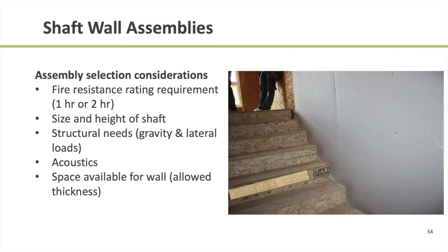Let's talk about selecting an assembly for our shaft enclosure walls. We know what materials can be used, whether it's a one or two-hour rated wall. There are also other requirements to think about: does the shaft wall need to function as a shear wall? Acoustics is a big concern, especially when a stair or elevator shaft is directly adjacent to a hotel room or apartment. Getting really good acoustical performance of that shaft enclosure wall is important. Usually the thicker the wall, the better the acoustics, but there are limitations since a thicker wall eats up rentable or sellable floor space.